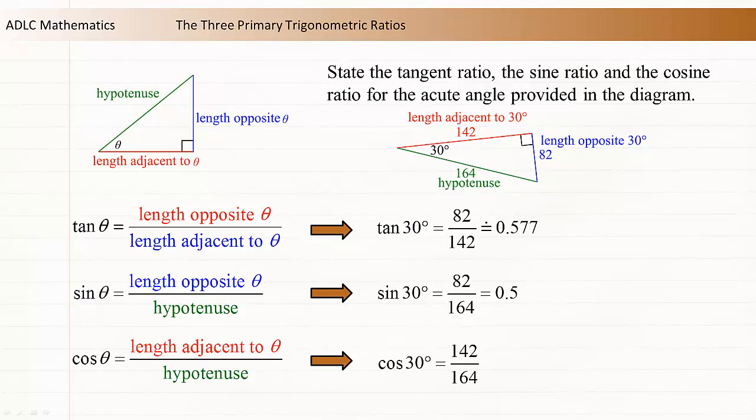The cosine of 30 degrees is equal to the length of the side adjacent to the 30-degree angle divided by the length of the hypotenuse. So the cosine of 30 is equal to 142 divided by 164, which is approximately 0.866.